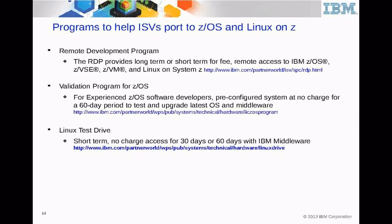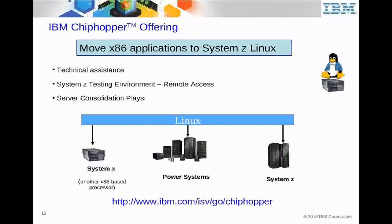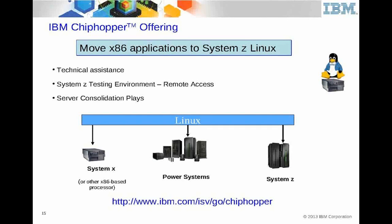For Linux, we also offer a no-charge test drive program, which is available for 30 days or 60 days if the solution involves IBM middleware. That's an opportunity to get in and kick the tires and see how things will work. We also have a more extensive program for those coming from a Linux environment — the Chip Hopper program — to help move applications from an x86 environment to Linux on System Z, or to Linux on Power Systems. We have great technical skills available to provide consultation and expertise in planning and executing the migration and testing of these applications to the System Z platform. We make available the servers to do this testing on our systems at no charge. When testing is complete, the offerings under Chip Hopper are registered in the IBM Global Solutions Directory, which helps give you visibility in the marketplace.